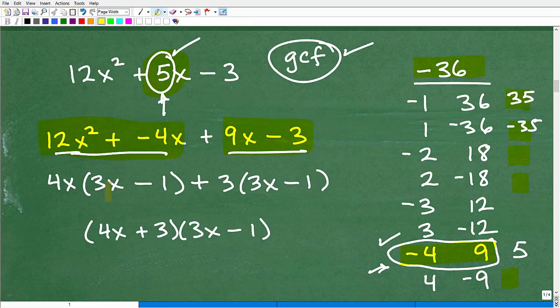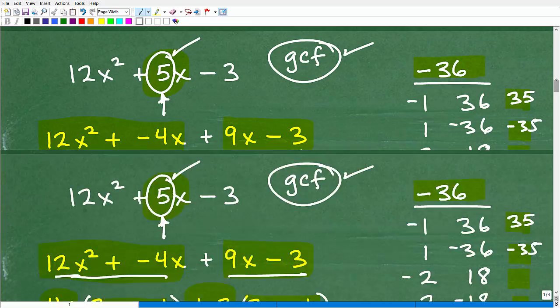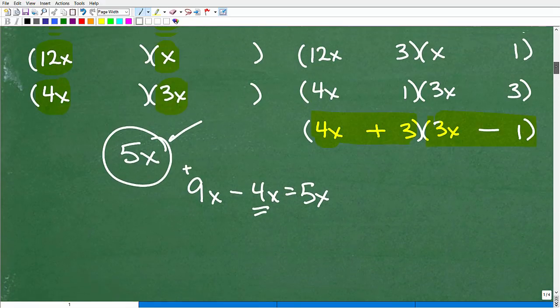Notice that we have the same common factor amongst each of these. This 3x minus 1. Well, that is one of our binomials in our answer. And the remaining information, the other binomial, because, remember, a trinomial always breaks up into two binomials, is this 4x and that plus 3. So, we have 4x plus 3. And that is the answer. 4x plus 3 times 3x minus 1 is what we got over here.